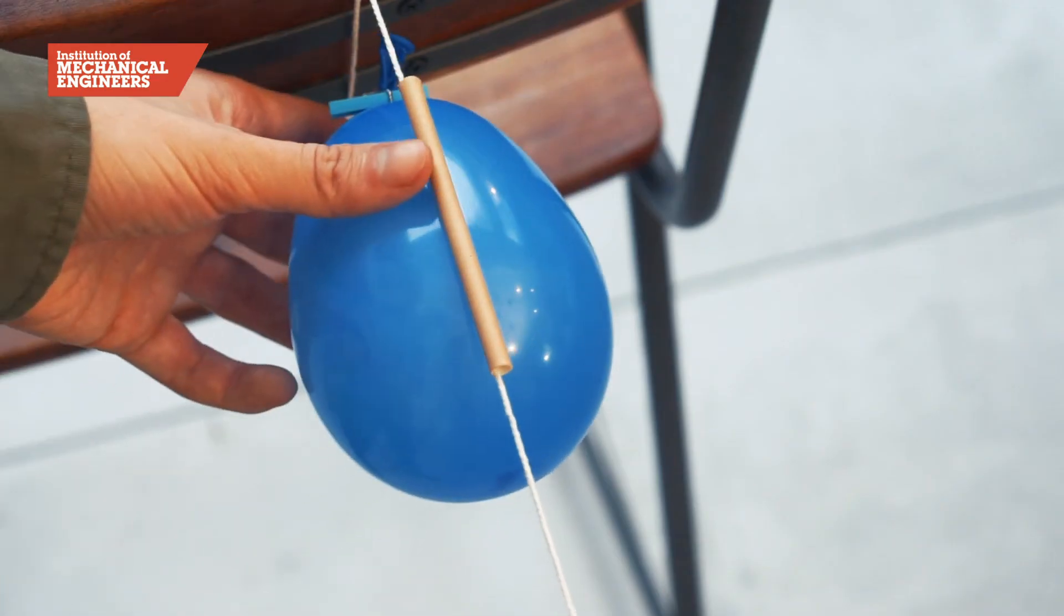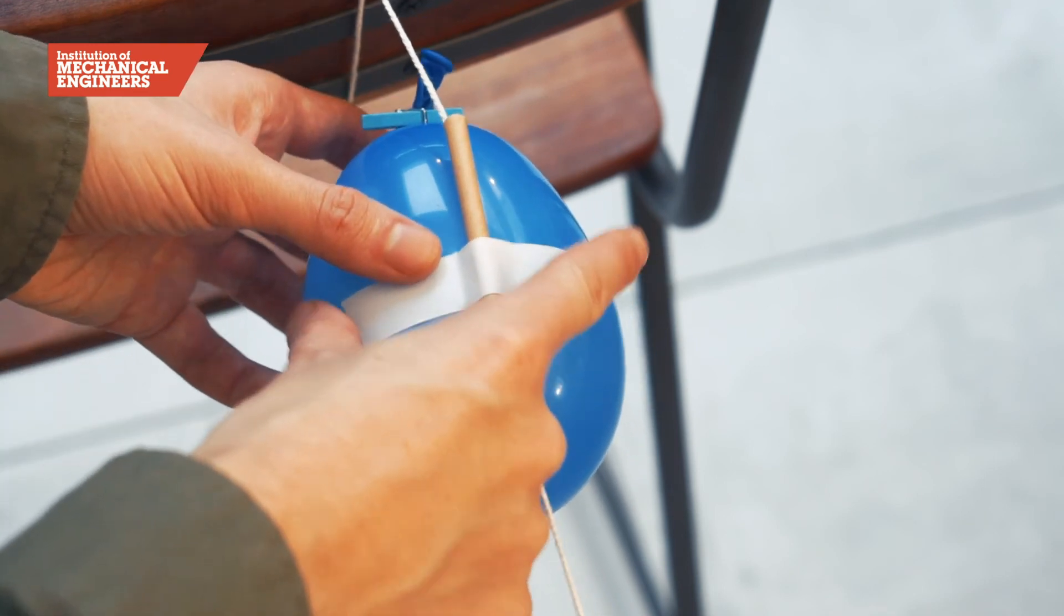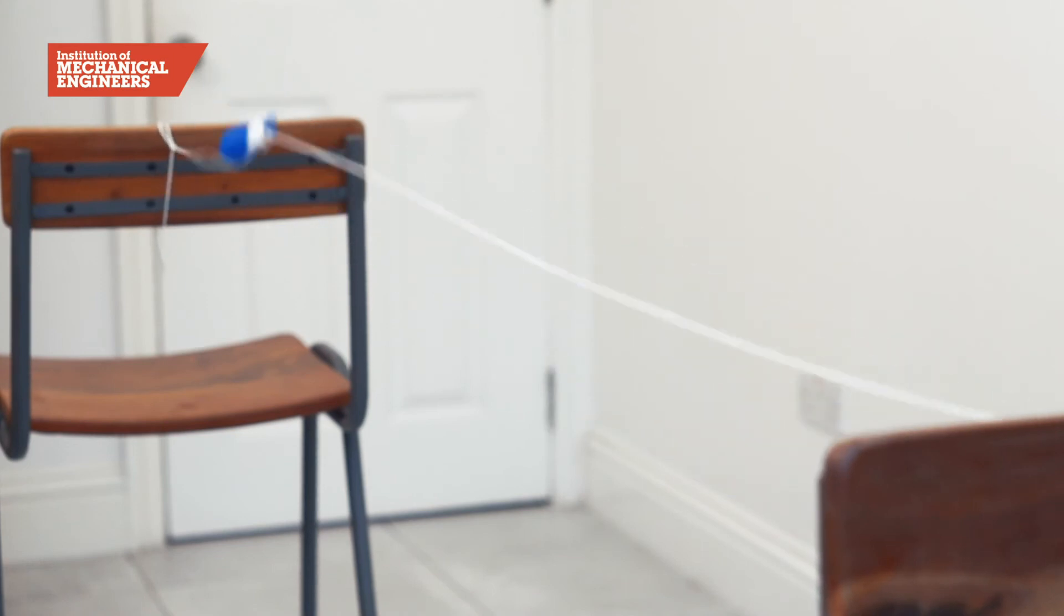Now the balloon is ready and we can tape it to the straw. We're ready for launch. All that is left to do is remove the peg and watch the rocket fly.